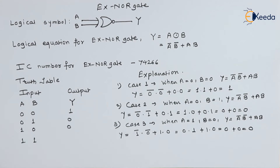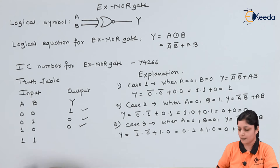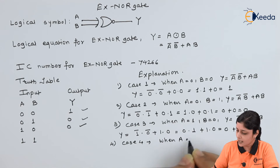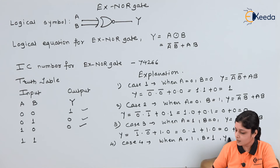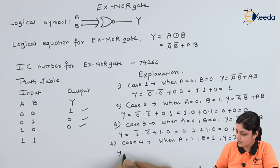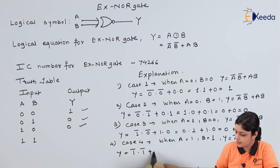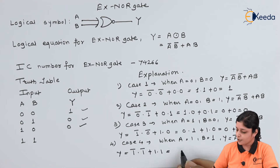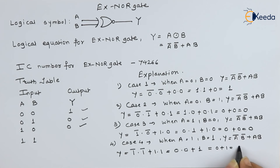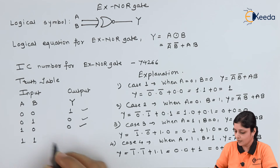Case 4: when A equals 1 and B equals 1, Y equals Ā·B̄ + A·B. Substituting: 1̄·1̄ + 1·1. The complement of 1 is 0, so 0·0 + 1·1 gives 0 + 1, so Y equals 1. In this way you obtain all possible combinations and answers.